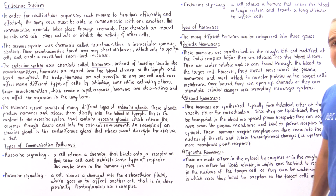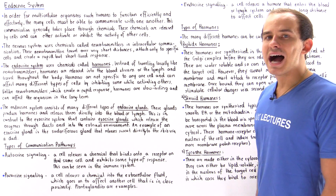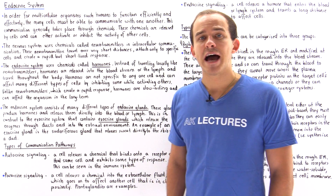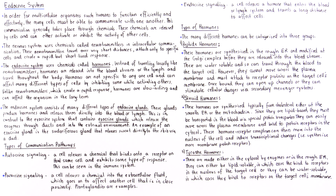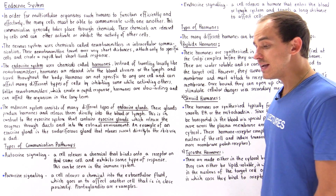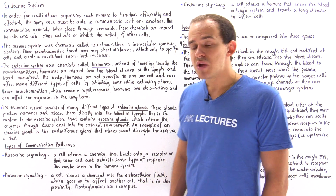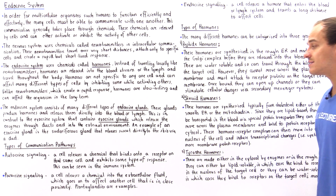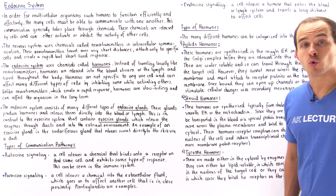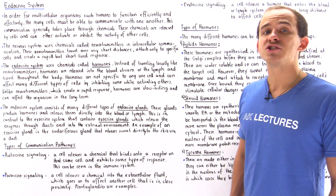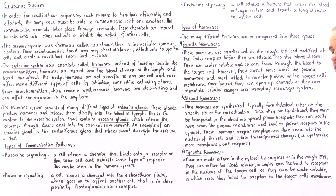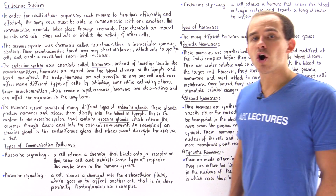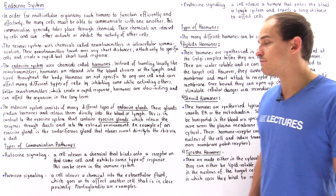Once steroid hormones arrive at a target cell, they can easily move across the cell membrane because they are lipid-soluble. Once inside the cytosol, they bind onto receptor proteins found there. The receptor protein-hormone complex then travels into the nucleus of the cell, where the steroid hormone can induce some type of transcriptional change — basically inducing the synthesis of certain proteins needed by the cell at that moment.